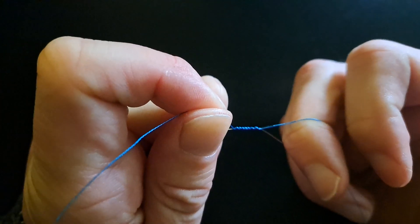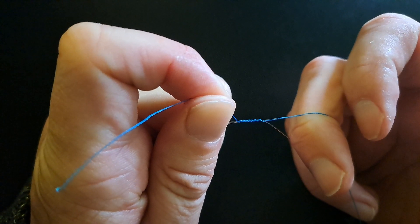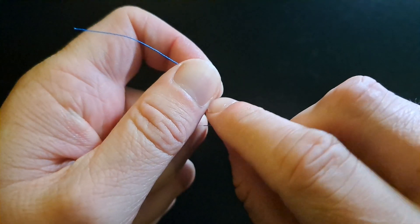You should end up with something that looks like that. Then we want to go back up the line the same amount of times, so seven times, keeping those loops as tight together as we can.